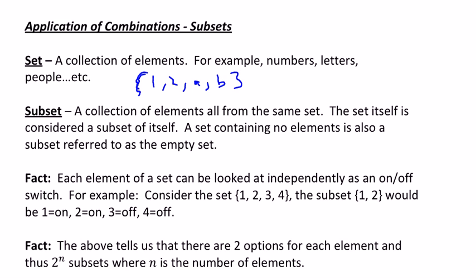A subset is a collection of elements from that same set. For another set to be a subset of a set, it has to have elements only from the original set. So for instance, {1, 2} would be a subset of our set. But {1, 2, 3} would not be a subset because 3 is not in the original set {1, 2, A, B}. That's what makes something a subset.